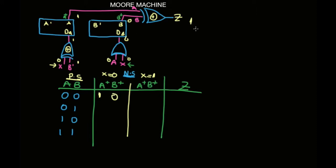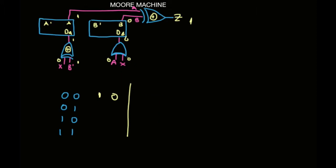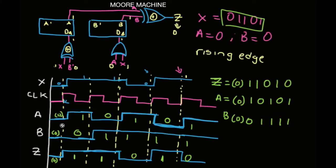We see that Z is equal to 1 when A is 0 and B is 0 as the present state. But let's see what's happening, because I know for a fact that Z should be 0. Let's go back and look at the timing diagram. When A is 0 and B is 0, we have Z equal to 0. So what is happening? There's something wrong.